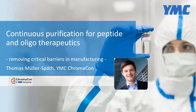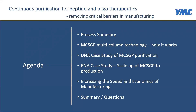Welcome to this webinar on continuous purification for peptides and oligotherapeutics and about removing critical barriers in manufacturing. I'd like to start with an overview of today's presentation. I'll give you a summary of what MCSGP is, then explain how the technology works, followed by a DNA case study and an RNA case study that highlights the scale of MCSGP. Then we'll show how MCSGP can increase speed and economics of manufacturing, and finally there's time for a summary and questions.